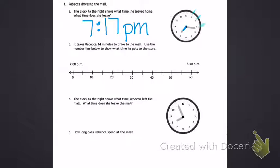Letter B. It takes Rebecca 14 minutes to drive to the mall. Use the number line below to show what time she gets to the store. So we have 7:17. If I mark my number line, I know this dash is 15.